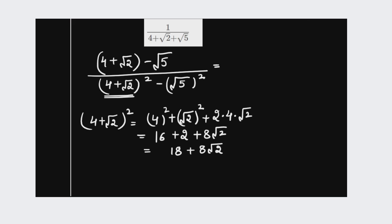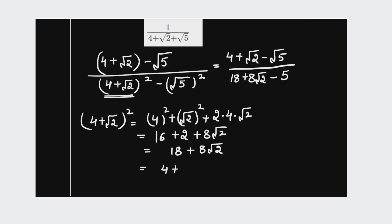Writing this down: the expression becomes 4 plus root 2 minus root 5, divided by 18 plus 8 root 2 minus (root 5)², which is 5. So the denominator simplifies to 18 minus 5 plus 8 root 2, giving us 13 plus 8 root 2.